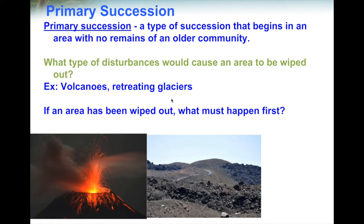Retreating glaciers can also cause nothing to be left of the older community. A glacier is a large area of snow and ice. Because the climate is changing and temperatures are rising, those glaciers are now starting to retreat — that means they're starting to melt. Here's a quick video explaining what retreating glaciers are.